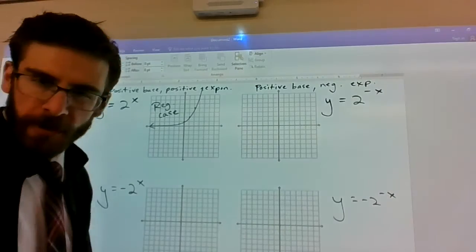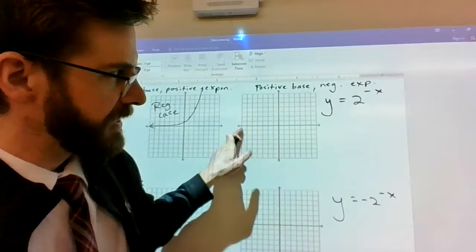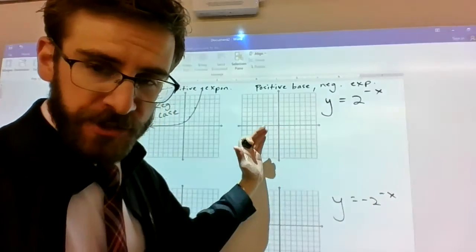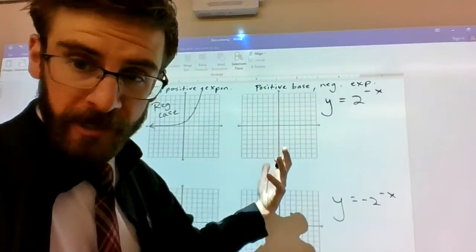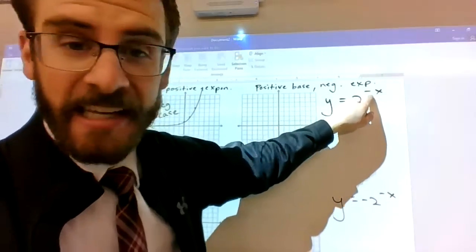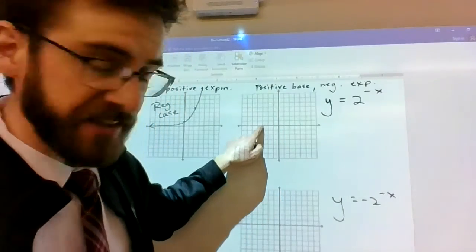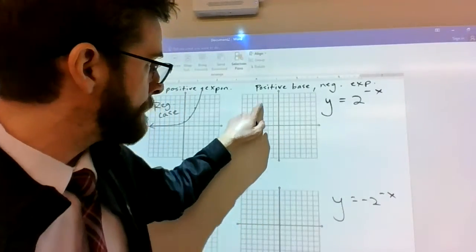Well, if you recall, plugging in negative numbers makes that negative turn into a positive. So it's sort of like plugging in negative 3 means it's 2 to the negative negative 3 power. That's 2 to the 3 power. That'd be left 3, because that's what you plugged in for the x, up 8.